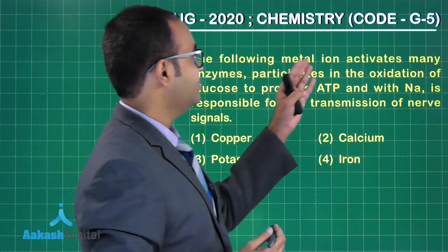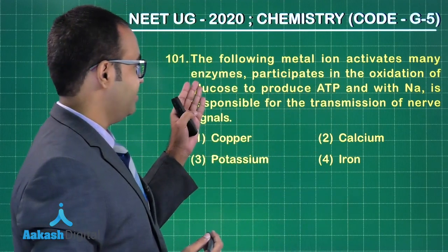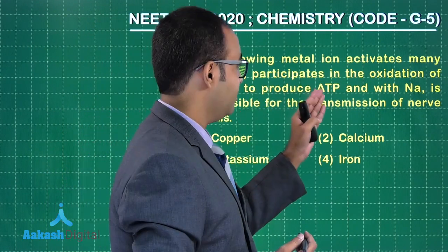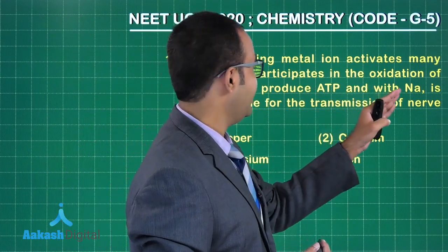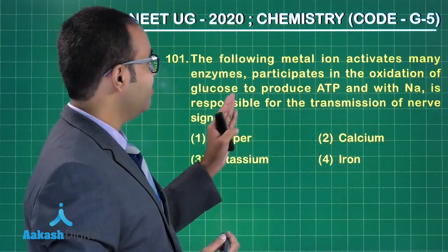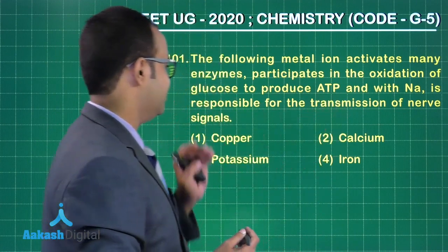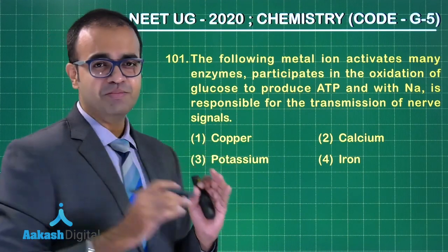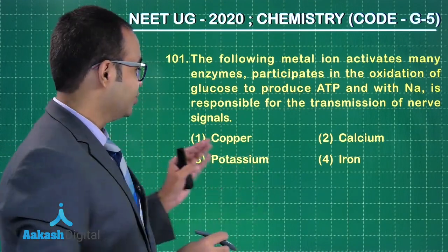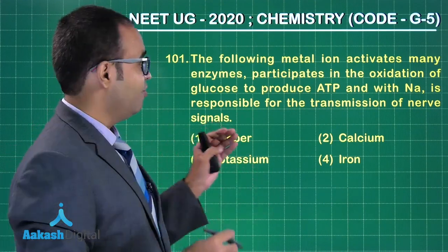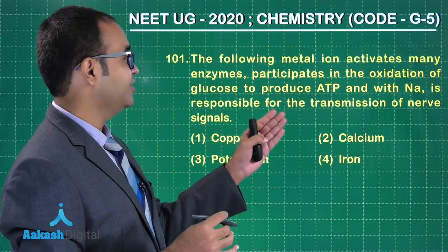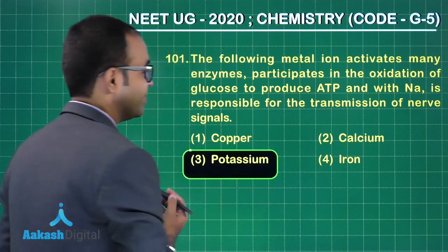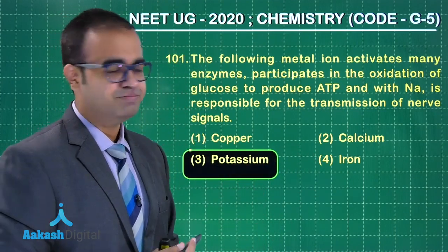Let us move on to the next question. The following metal ion activates many enzymes, participates in the oxidation of glucose to produce ATP, and with Na is responsible for the transmission of nerve signals. So you guys are bio students so you might be knowing this. Which ion do you think will be responsible for transmission of nerve signals? The answer is the third one. It's a factual question.